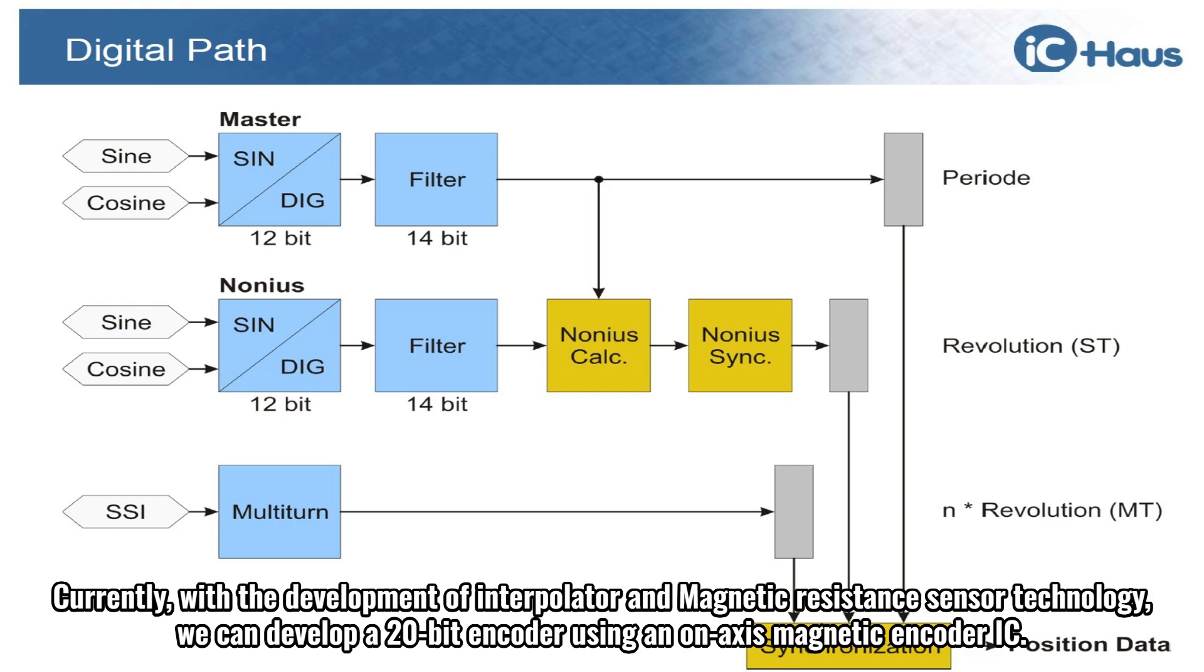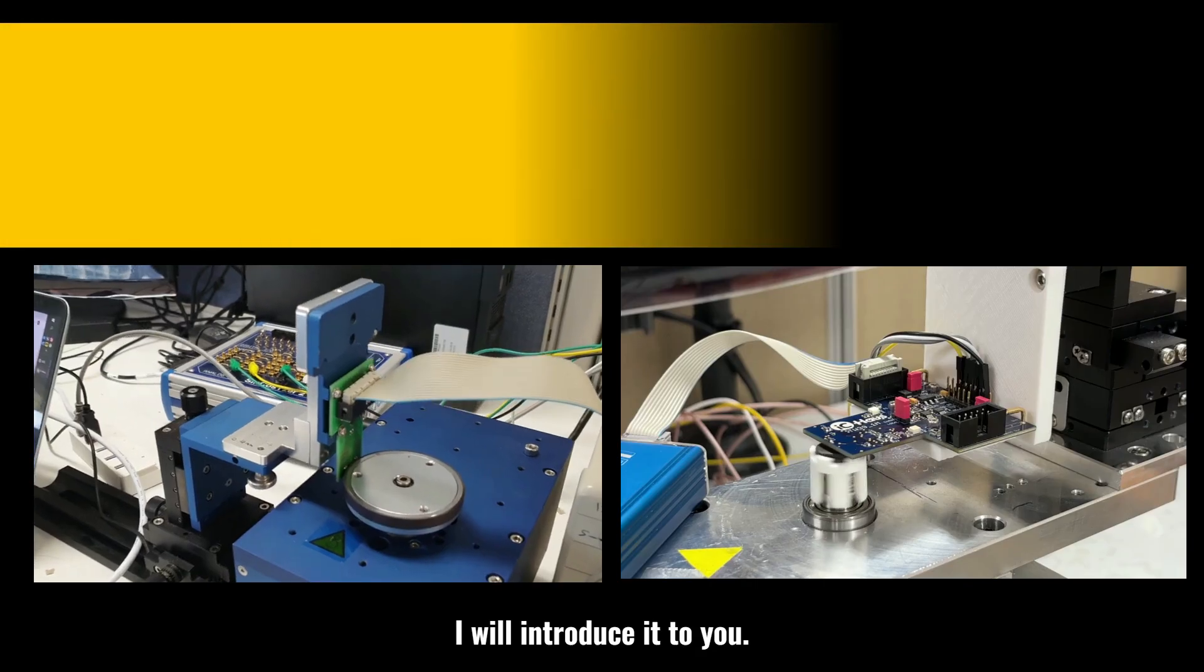Currently, with the development of interpolator and magnetic resistance sensor technology, we can develop a 20-bit encoder using an on-axis magnetic encoder IC. I will introduce it to you.